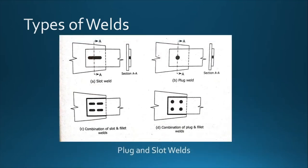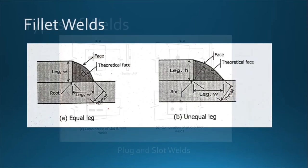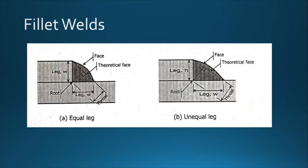The fourth type is plug and slot welds. Their appearance is similar to bolt holes — there are slotted bolt holes or elongated slots. Sometimes it is a combination: the connection is bolted and then also welded. Our focus will be on the design of fillet welds, since these are the most common.